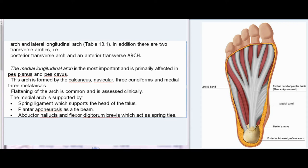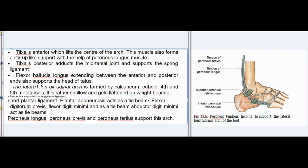Abductor hallucis and flexor digitorum brevis act as spring ties. Tibialis anterior lifts the center of the arch and also forms a stirrup-like support with the help of peroneus longus muscle. Tibialis posterior adducts the midtarsal joint and supports the spring ligament. Flexor hallucis longus, extending between the anterior and posterior ends, also supports the head of the talus. The lateral longitudinal arch is formed by the calcaneum, cuboid, and fourth and fifth metatarsals. It is rather shallow and gets flattened on weight bearing. This arch is supported by the long plantar ligament, short plantar ligament, plantar aponeurosis as a tie beam, flexor digitorum brevis, flexor digiti minimi, and abductor digiti minimi. Peroneus longus, peroneus brevis, and peroneus tertius also support this arch.